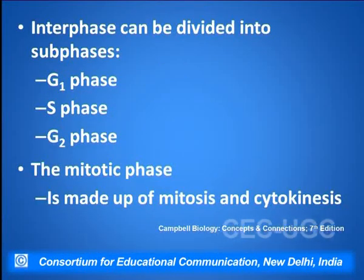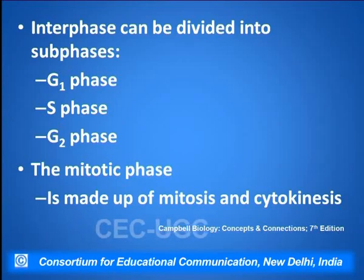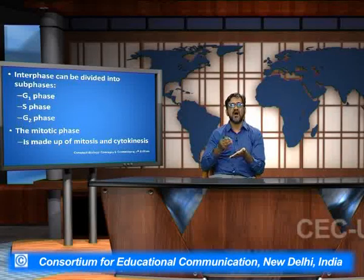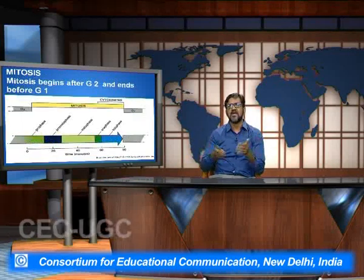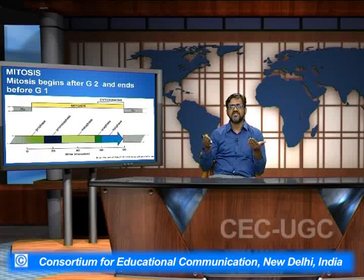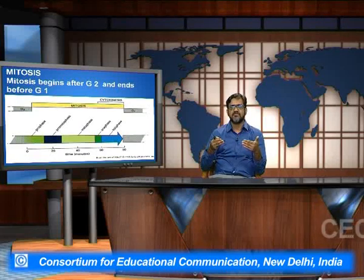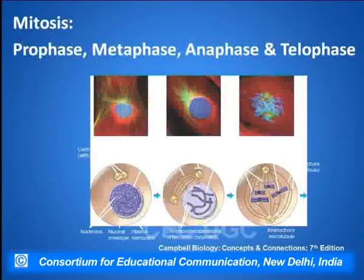The interphase can be divided into three sub-phases: G1 phase, S phase, and G2 phase, while the mitotic phase is basically made up of mitosis and cytokinesis, which means how exactly the cytoplasm is divided into the two daughter cells. This is how exactly mitosis begins after the G1 phase and ends before the next G1 phase, with the process of interphase subsequently going into the mitosis phase.